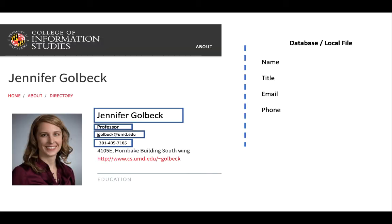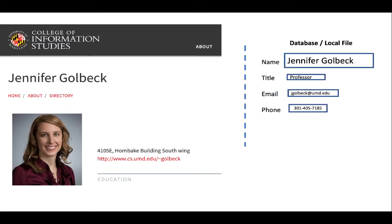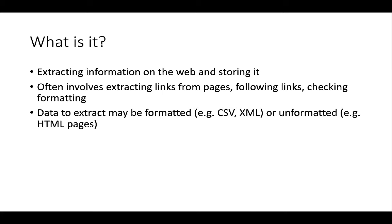The general idea behind web scraping is that you can take a formatted or semi-formatted web page — like this one from the directory at the iSchool at Maryland — highlight the fields that you're interested in, and then write some code that extracts those off the web page into a database or a local file. So the idea is that we're extracting information from the web and storing it — in a text file, a database, a spreadsheet, whatever format you like.